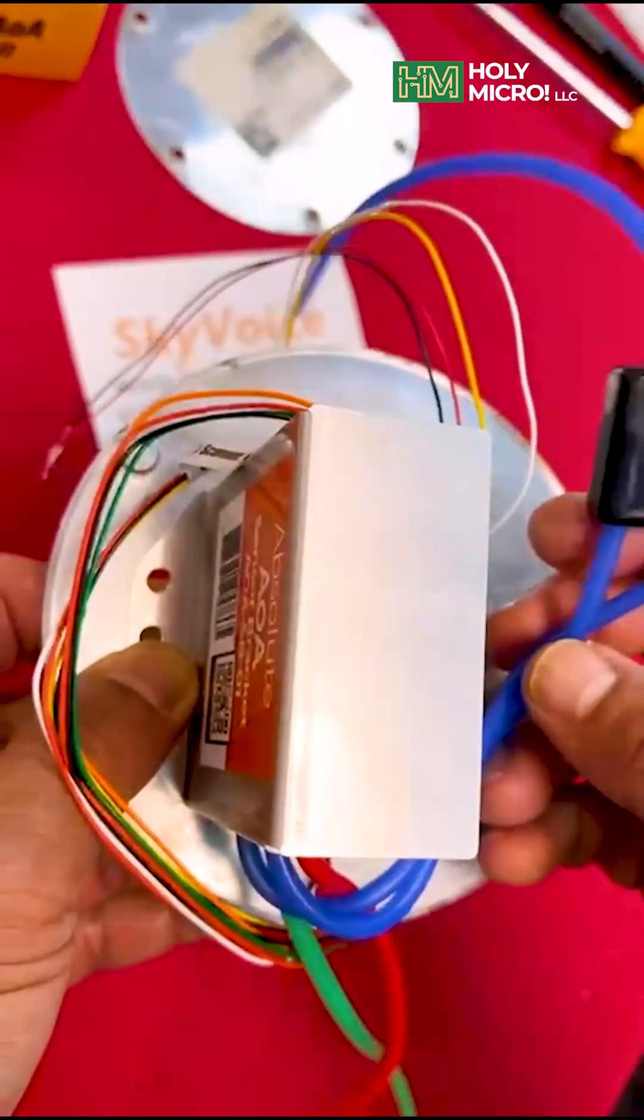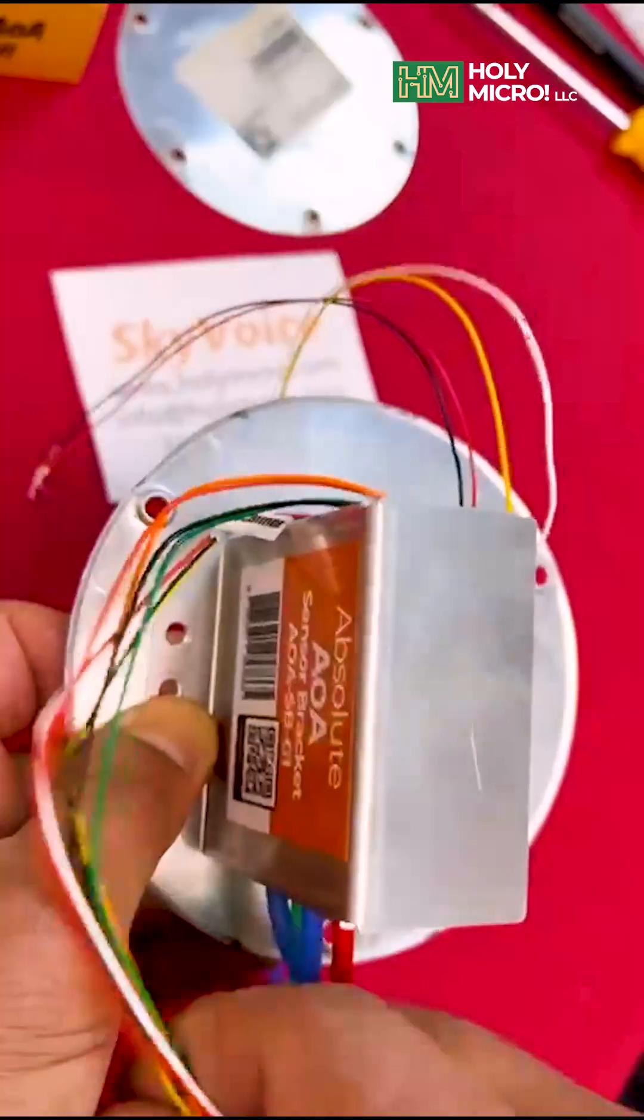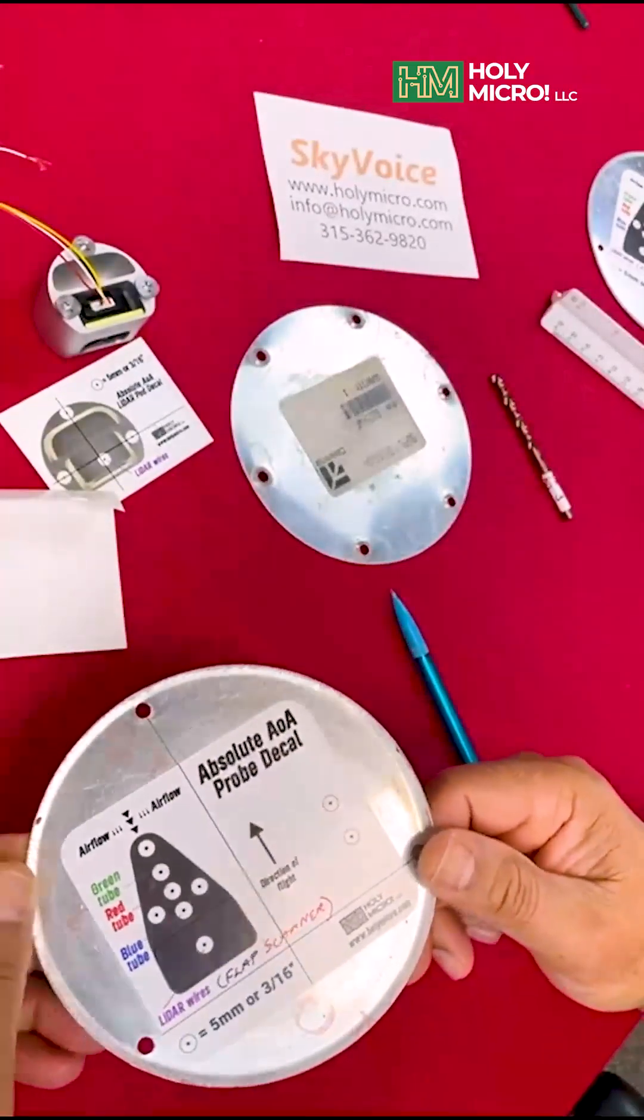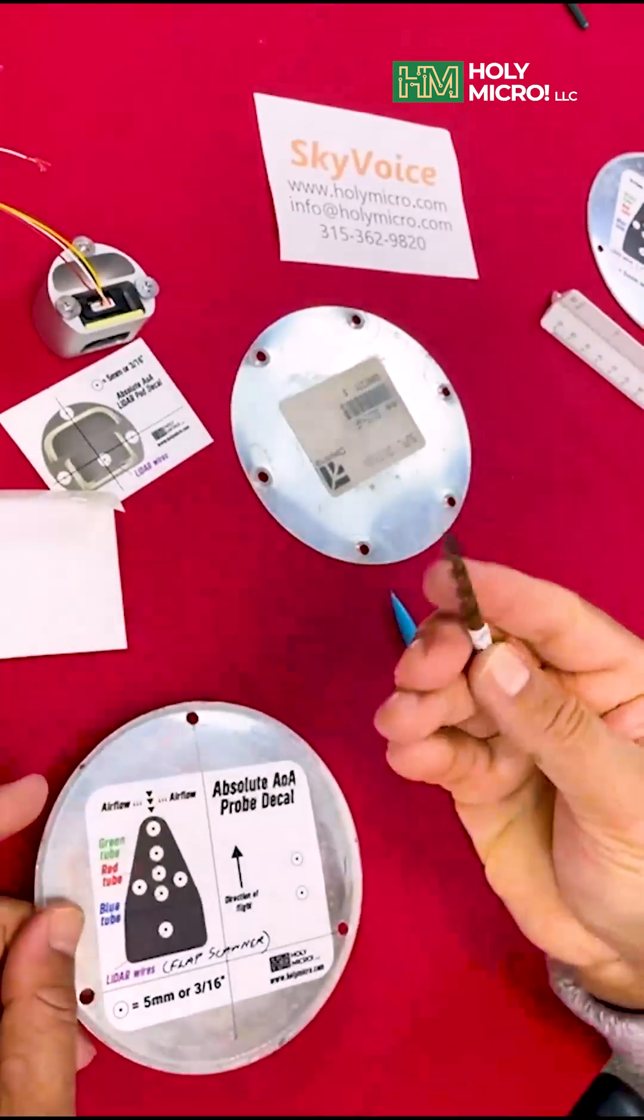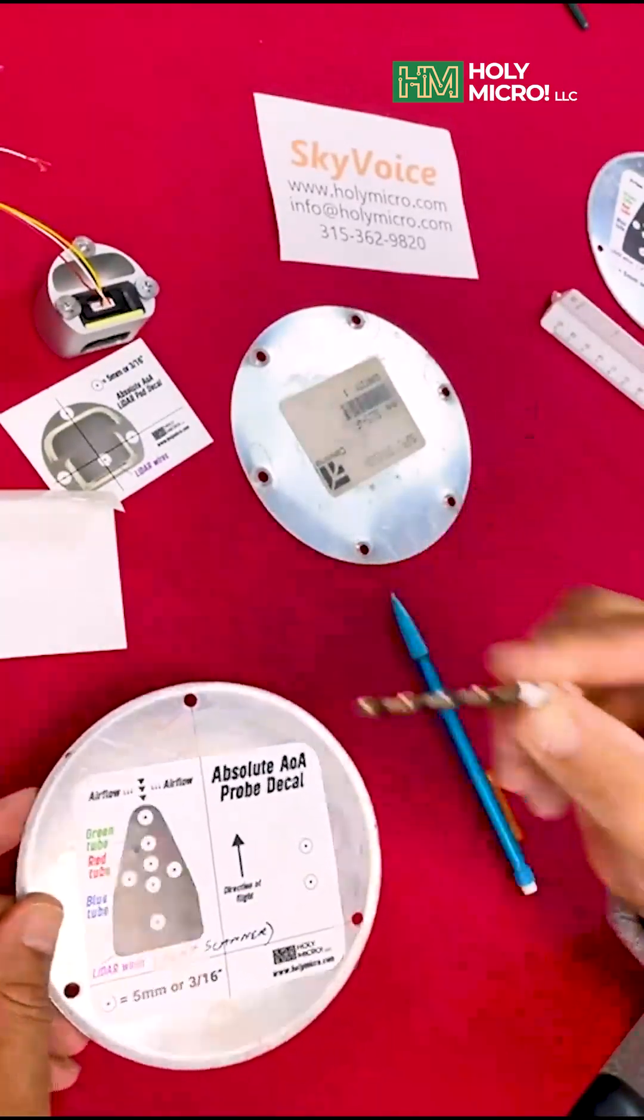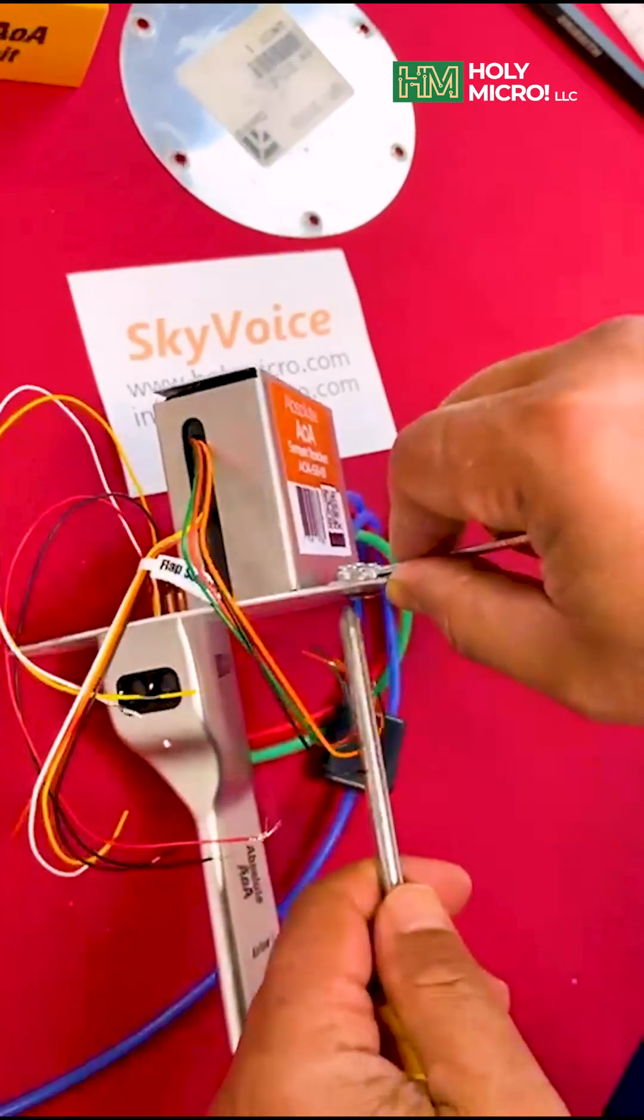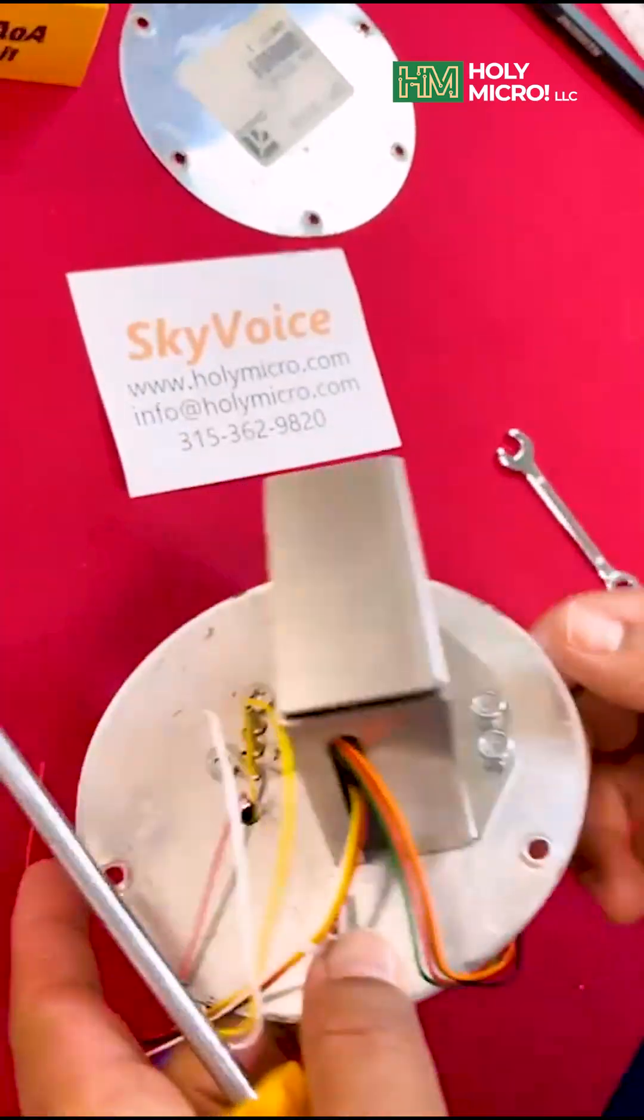The location or orientation of the sensor unit is not critical to its function. The hole drilling decal sticker shows the sensor unit installed to the side of the probe, but you can install it behind the probe or at any other convenient location near the probe. If space is tight in your wing cavity, you may carefully bend the ears of the mounting bracket to install the unit at an angle.